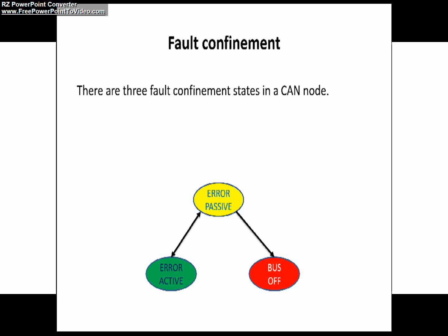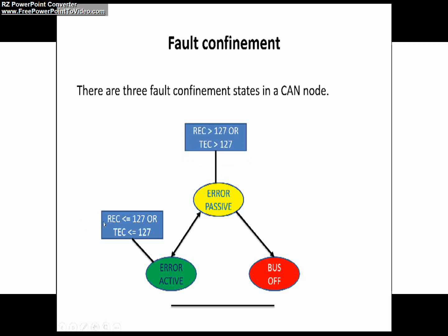Now we will discuss what these states are. Starting with the Error Active State — when will a CAN node be in Error Active State? The node decides based on TEC and REC error counter values. As you can see in this picture, if the transmit error counter and receive error counter values are less than or equal to 127, the CAN node is in Error Active State. This node can normally take part in bus communication and sends an active error flag when an error has been detected. It sends an active error frame when it detects an error.